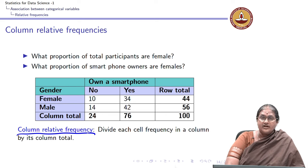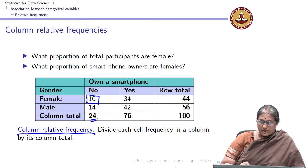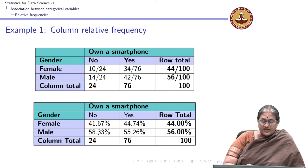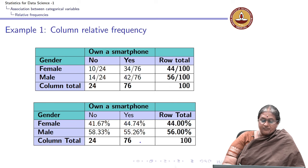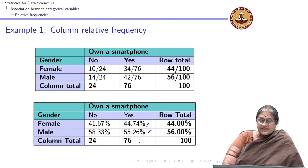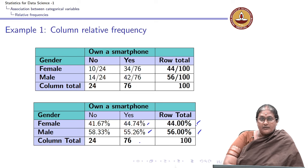Looking at the computed column relative frequencies: 41 percent of non-owners are female and 58 percent are male, whereas among owners, 44 percent are female and about 55 percent are male. In total, 44 percent are female and 56 percent are male. These are the column relative frequencies.